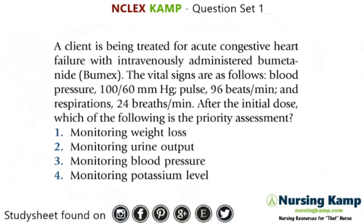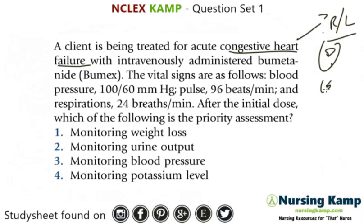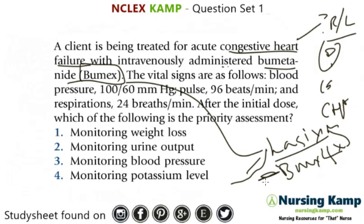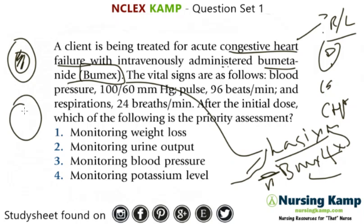Next question: a client is being treated for congestive heart failure — it's a generic question about CHF. With IV Bumex — Bumex is four times as potent as Lasix, so it's going to really get rid of fluid. That's risky because if the patient loses too much fluid, they're going to dry out and get decreased blood pressure.